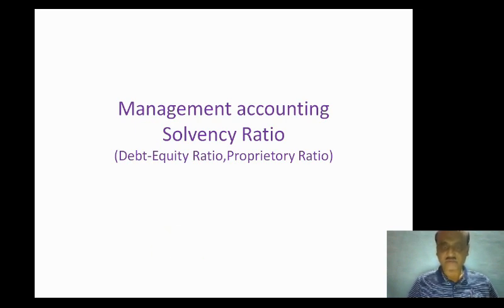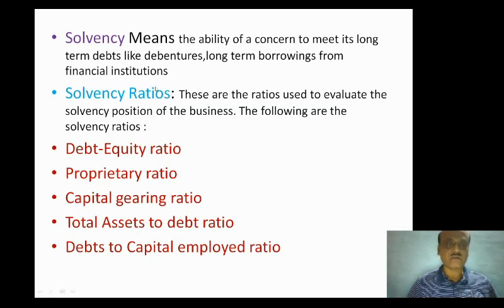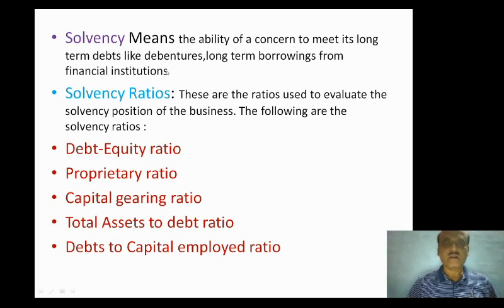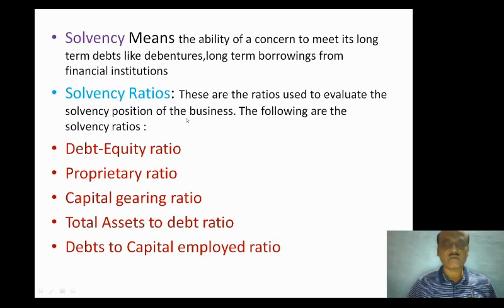The solvency ratio is the ability of a concern to meet its long-term obligations like debentures and long-term borrowings from financial institutions. These are the ratios used to evaluate the solvency position of the business. The solvency ratios include capital gearing ratio, total assets to total debt ratio, and debt to capital employed ratio.